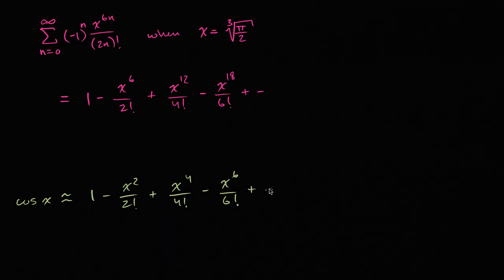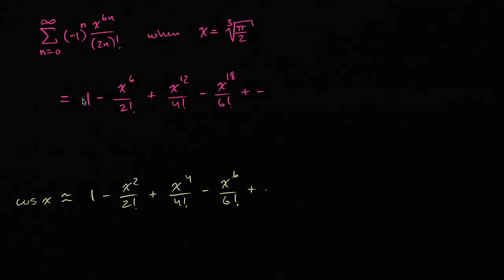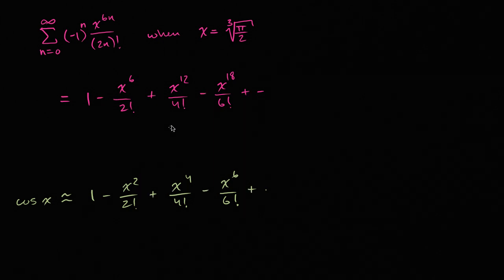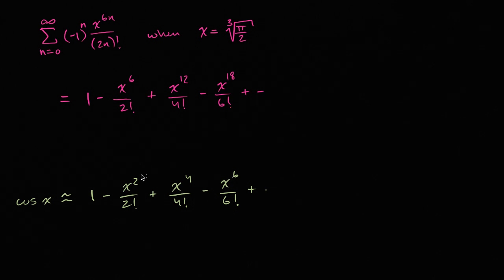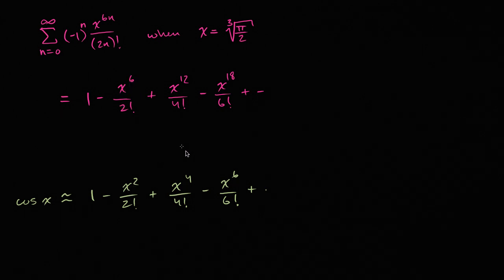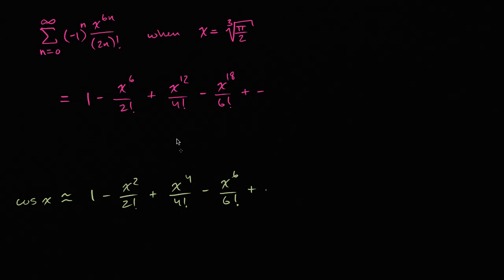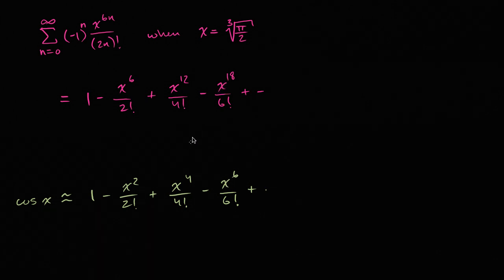You can probably see the similarities. The first terms are the same, the signs alternate positive-negative in the same pattern, and the factorials match: two factorial, four factorial, six factorial. The difference is the exponents on the x's: here it's x squared, x to the fourth, x to the sixth — whereas our series has x to the sixth, x to the twelfth, x to the 18th.